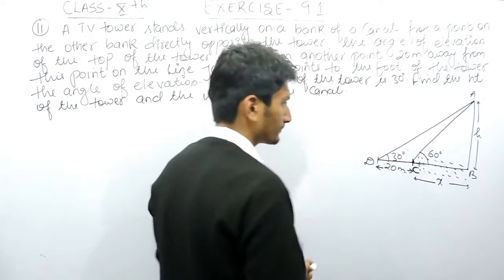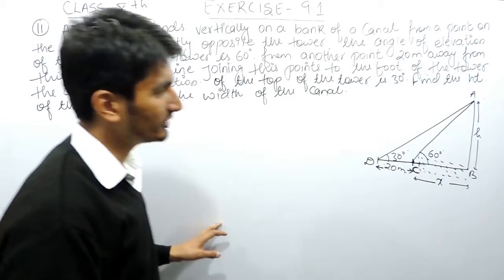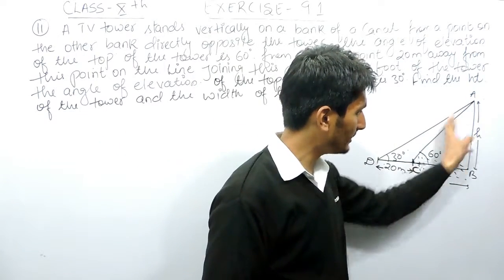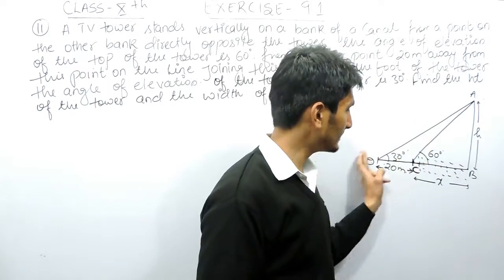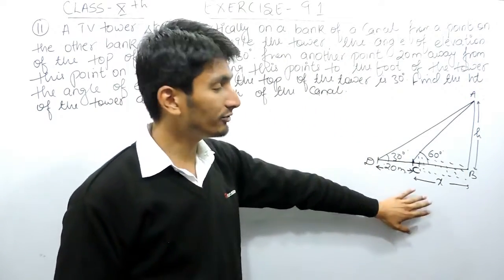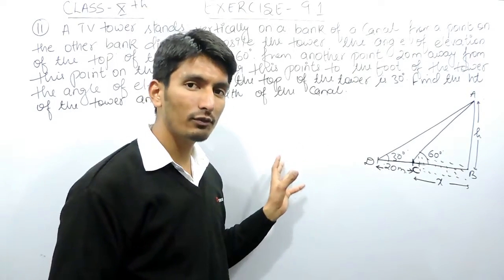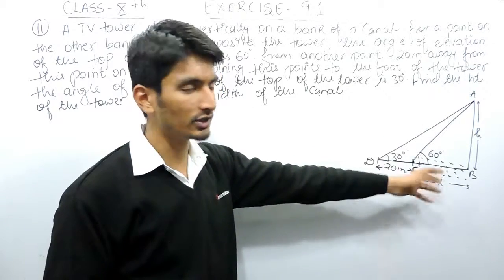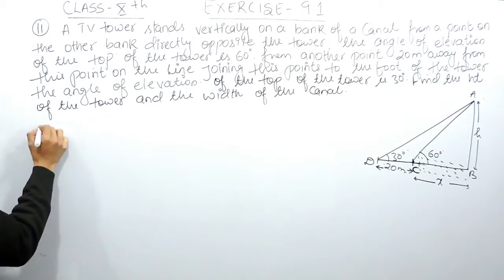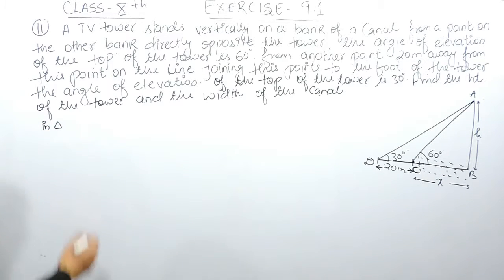This diagram is important. There are two triangles: the first is triangle ABC (the smaller one) and the second is triangle ADB (the bigger one). In both triangles, we need to find the ratio for tan θ and substitute the value from one equation into the second equation to get our answer.